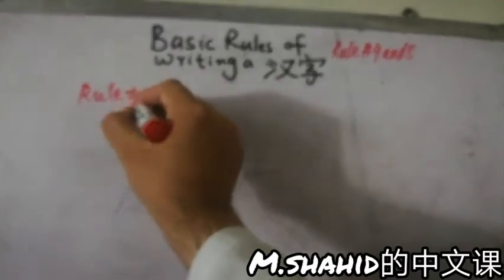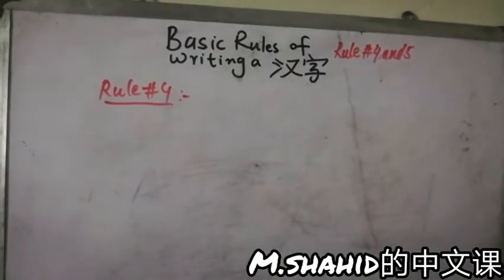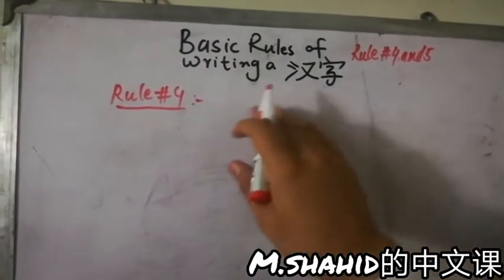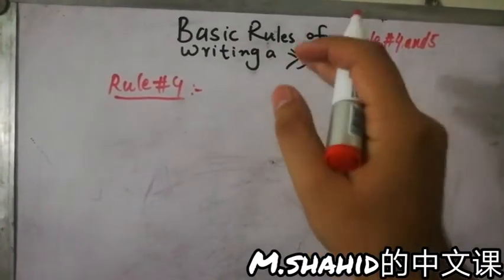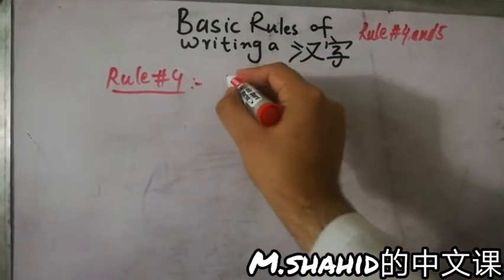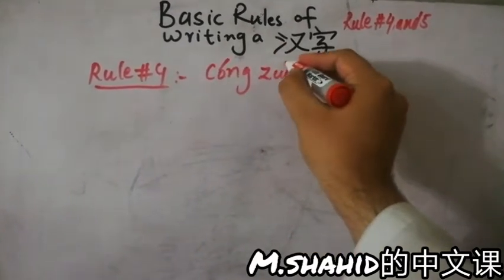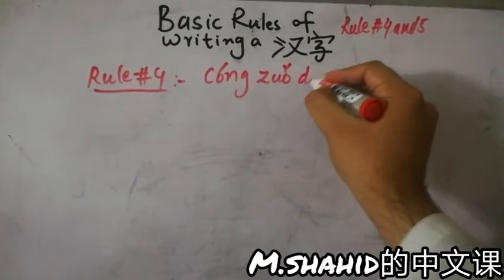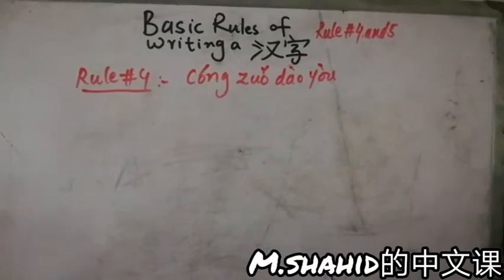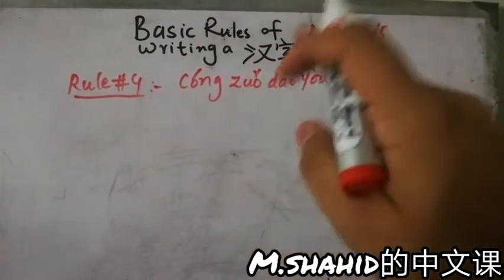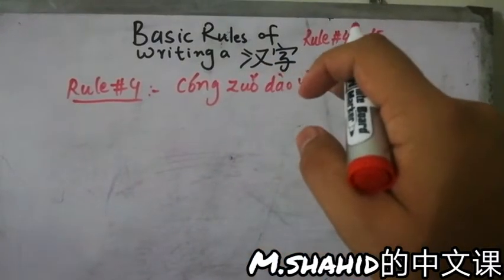So what does rule number four tell us? Rule number four tells us that if you write a Chinese character, you have to keep this in mind, this order. So what does it mean? Cóng zuǒ dào yòu.